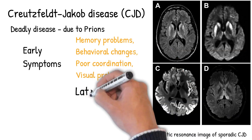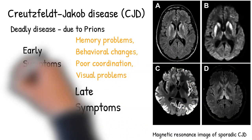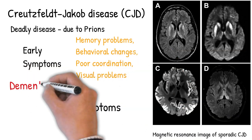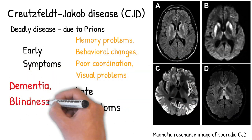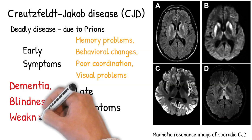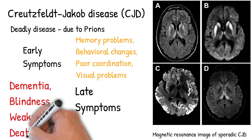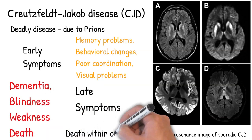Later symptoms include dementia, involuntary movements, blindness, weakness, and coma and death. Most people die within a year of diagnosis.